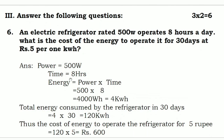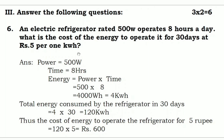Third section — Answer the Following Questions — has three questions, each carrying two marks. Sixth question: an electric refrigerator rated 500 watt operates eight hours a day. What is the cost of energy to operate it for 30 days at rupees 5 per kilowatt-hour? Power of the refrigerator is 500 watt, time is 8 hours. Using the formula Energy = Power × Time: 500 × 8 = 4000 watt-hours, which is 4 kilowatt-hours per day.